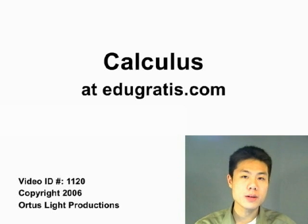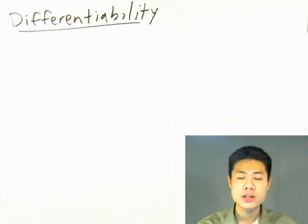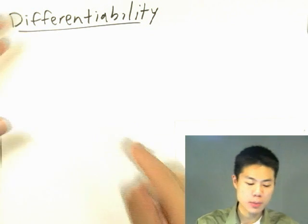For a function to be differentiable at a point, it has to satisfy several conditions. The first condition is that a function has to be continuous at that point.